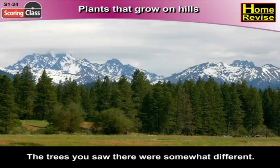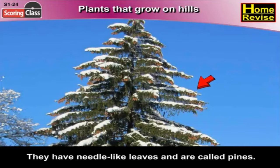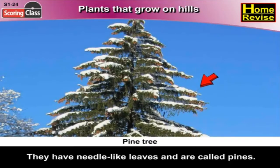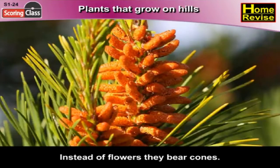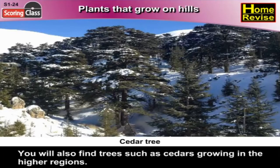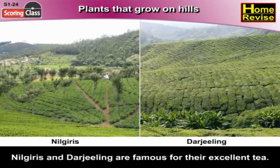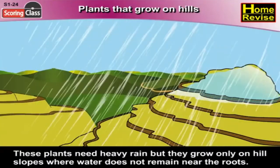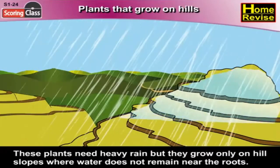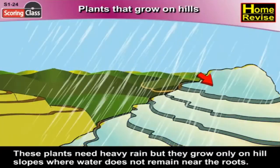The trees you saw there were somewhat different — they had needle-like leaves and are called pines. Instead of flowers, they bear cones. You will also find trees such as cedars growing in the higher regions. Tea plants also grow in hilly regions; Nilgiris and Darjeeling are famous for their excellent tea. These plants need heavy rain but grow only on hill slopes where water does not remain near the roots.